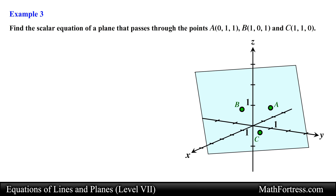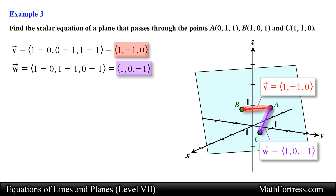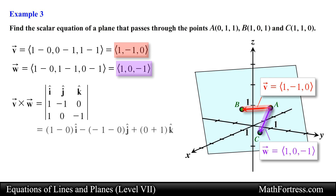We define one vector with initial point A and terminal point B as vector V, and a second vector with initial point A and terminal point C as vector W. Subtracting the corresponding coordinates of the initial point from the terminal point for each vector, we obtain the components of vector V and vector W. Now we cross these vectors by setting up the determinant and expanding by cofactors to obtain the following vector, which is orthogonal to both vector V and vector W as well as the plane containing all three points.